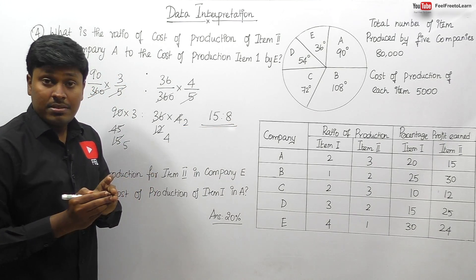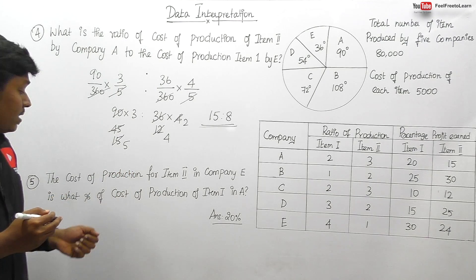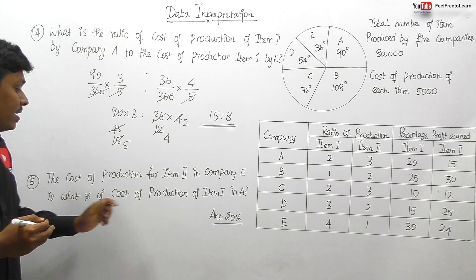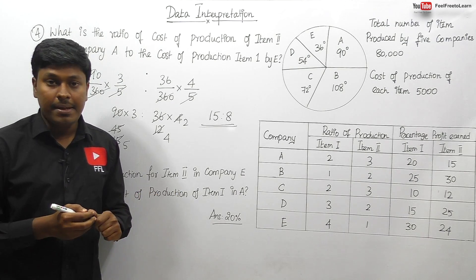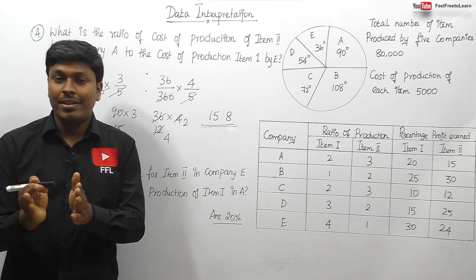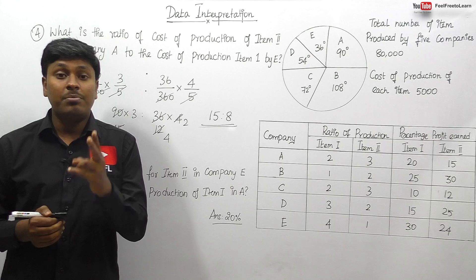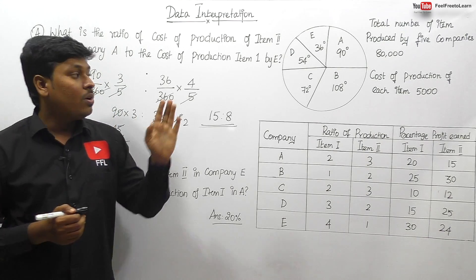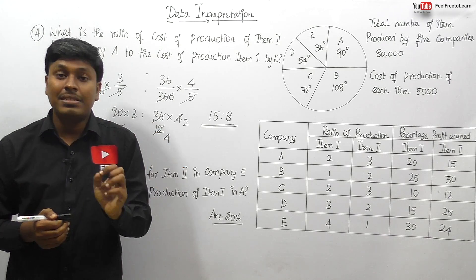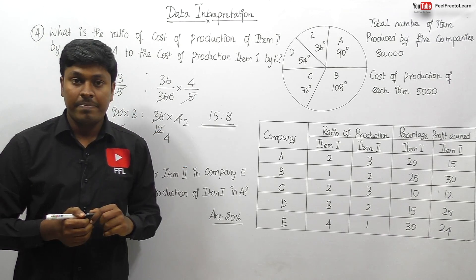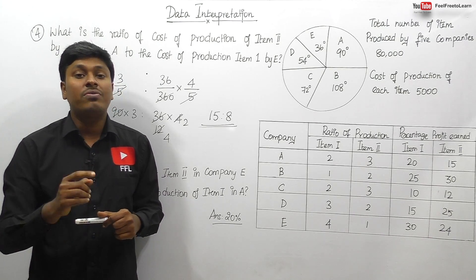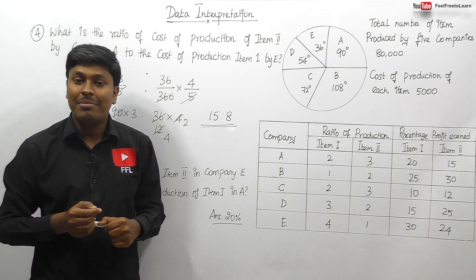Question number 5 — the cost of production for item 2 in company E as a percentage of item 1 in company A — is left for you to solve on your own. Key reminders: simplify equations by taking common values, and zeros play a major role — 1 crore has 7 zeros, so never miss a zero. Thank you for watching; subscribe to the channel for more videos.